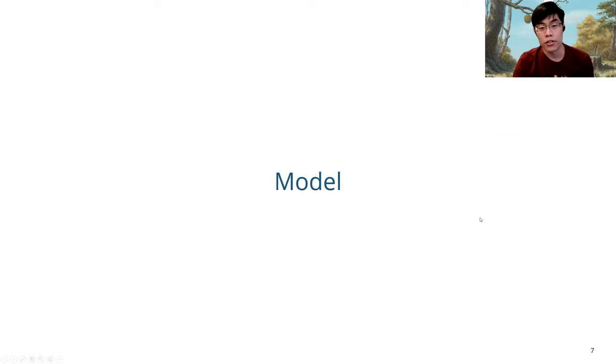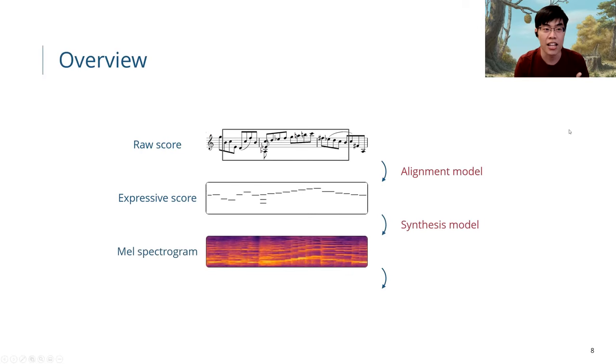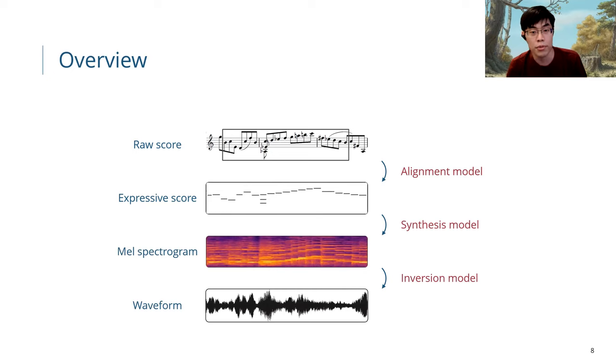Next I will talk about the model that we propose. Here's a very high level overview of the system that we propose. It's basically a three-stage system that consists of an alignment model, a synthesis model, and an inversion model. From the very beginning, we have the raw musical score and then the alignment model would try to generate the expressive timing of the score, basically the onset and duration for each note inside the raw score. Then the synthesis model will take the expressive score as inputs and try to synthesize the mel spectrogram frames. And finally, we will invert the mel spectrogram back to the waveform.